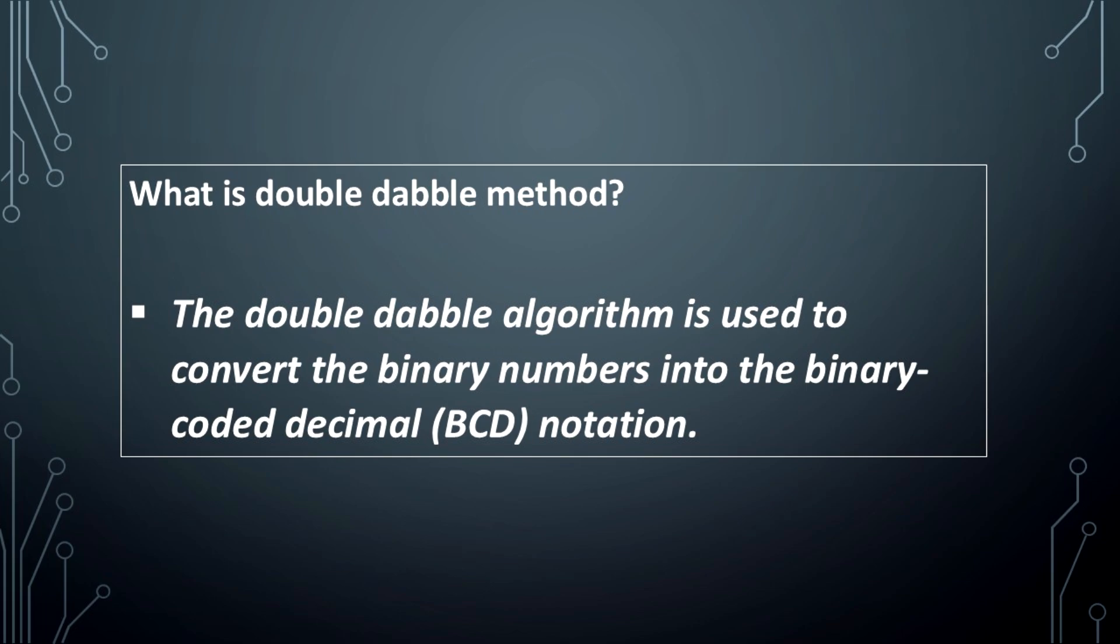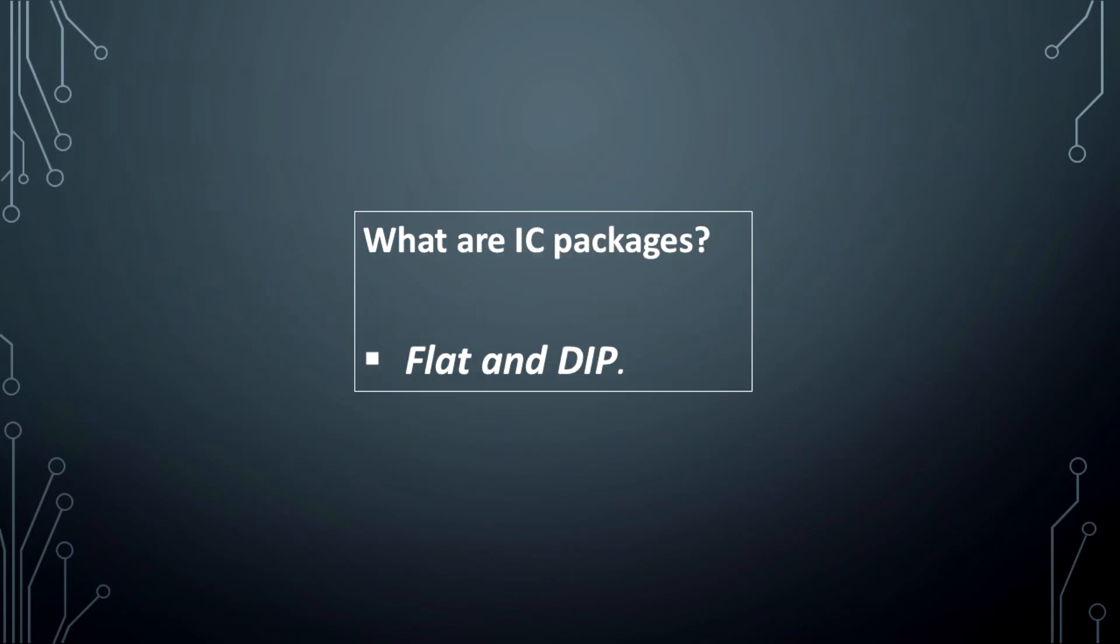What is the double-double method? The double-double algorithm is used to convert binary numbers into binary coded decimal notation. What are IC packages? Flat and DIP.